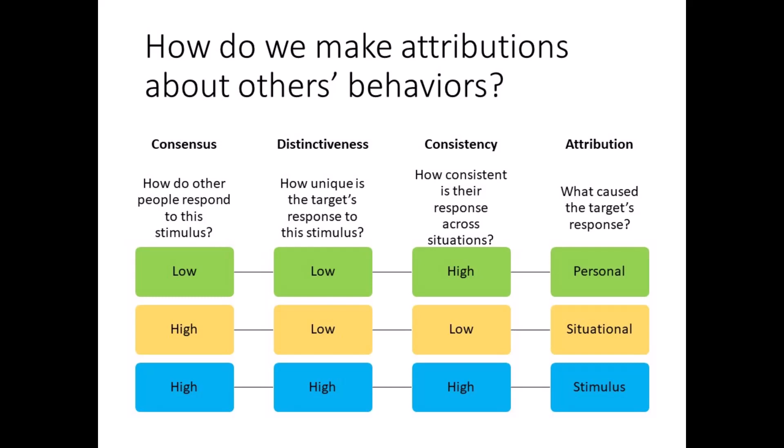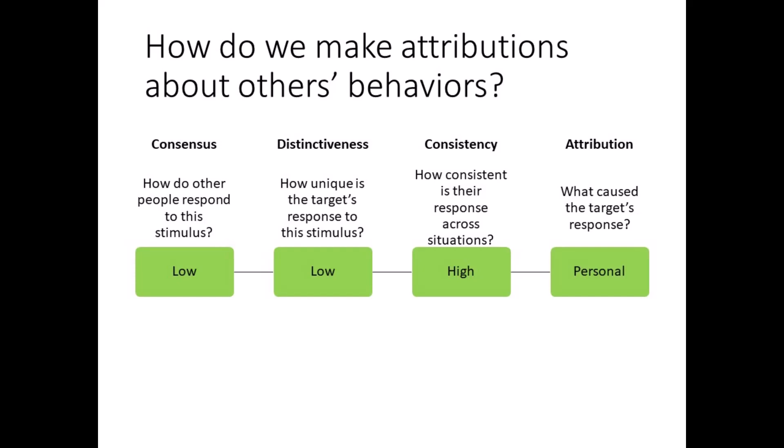Let's look at an example to illustrate this theory. Imagine you invite your friend to dinner and they are running late. You ask yourself: what is the cause of their lateness? The target is your friend, the stimulus is the invitation to dinner, and the response is being late. Most people would not be late to dinner, so consensus is low. Since it's normal for your friend to be late for dinner, distinctiveness is low. Your friend is typically late for school, work, and other events as well, so consistency is high. In this example, we will likely attribute our friend's lateness to their disposition.